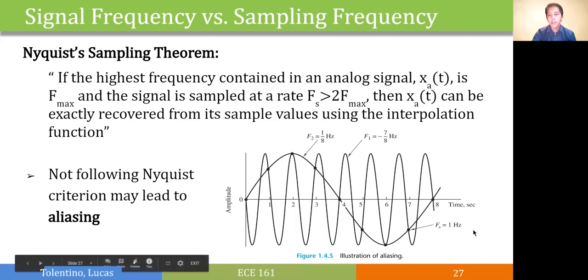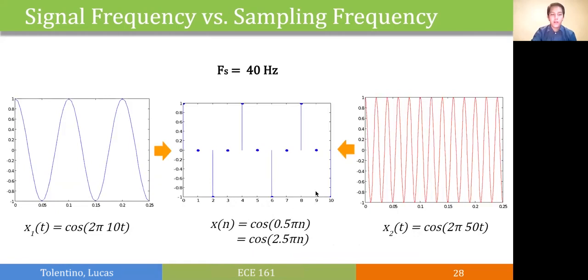To show you another example, if we have x1 of t which is a 10 hertz cosine and x2 of t which is a 50 hertz cosine, and we sample both at 40 hertz, both will reproduce the same discrete time signal. So x1 will be cosine 2 pi 10 n over 40, which leads to cosine 0.5 pi n, and x2 will be cosine 2 pi 50 n over 40, which leads to cosine 2.5 pi n. Trigonometrically speaking, these two cosines are one and the same. So x2 will also result in the same discrete time signal as x1, and that is what we call aliasing.